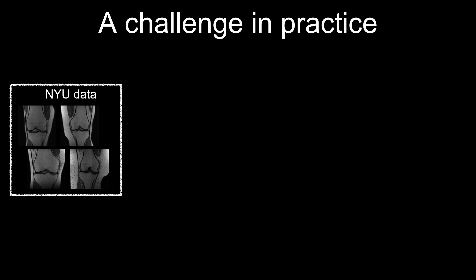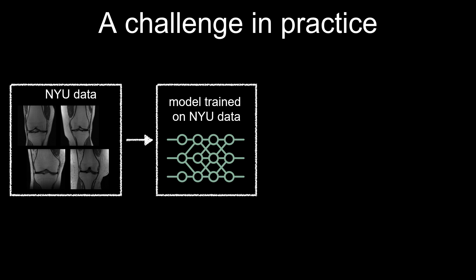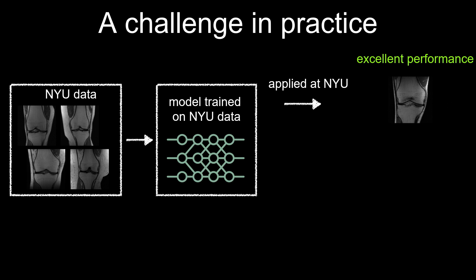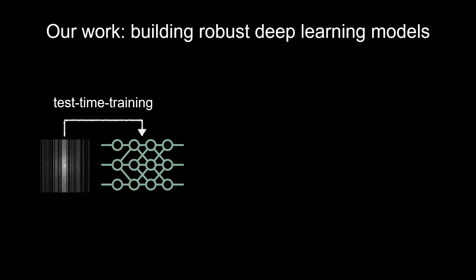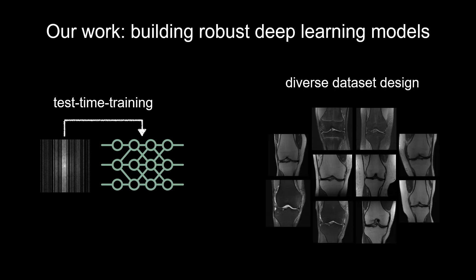One challenge in practice is the following. Let's say we build such a system, then go to a university — say New York University — collect a bunch of data, and train our neural network on that data. If we apply that neural network on the same kind of data, at the same hospital, under the same conditions and similar time, we get really good performance. However, if we apply this at TUM, where the patient population might be different and the way people use the scanners is different, you get a performance drop. This is a significant problem in practice, and a lot of the work in our lab goes into building robust deep learning models — ideas like test time training to improve performance, and building a very diverse dataset so that training on it yields a robust method.